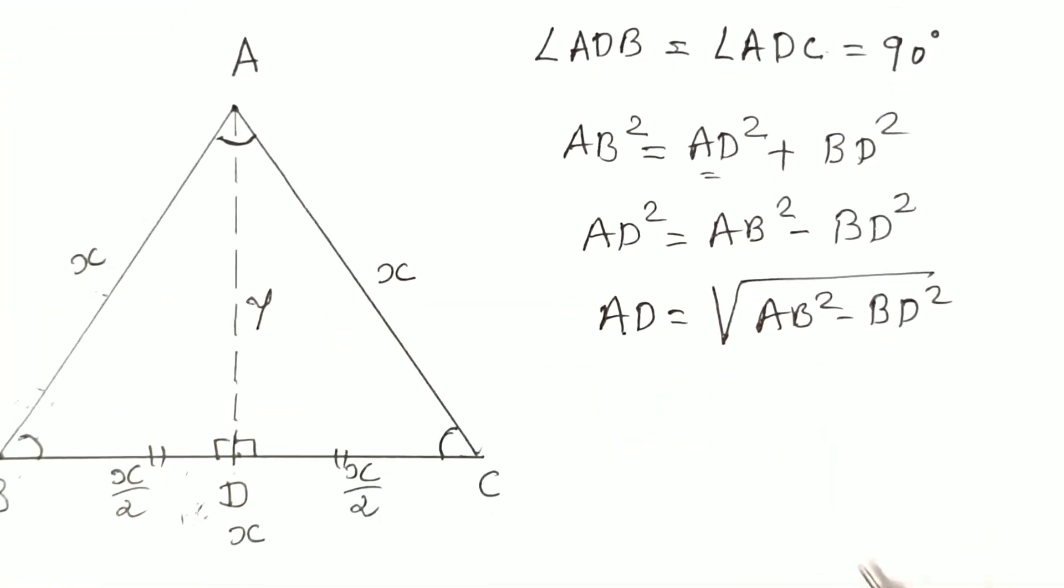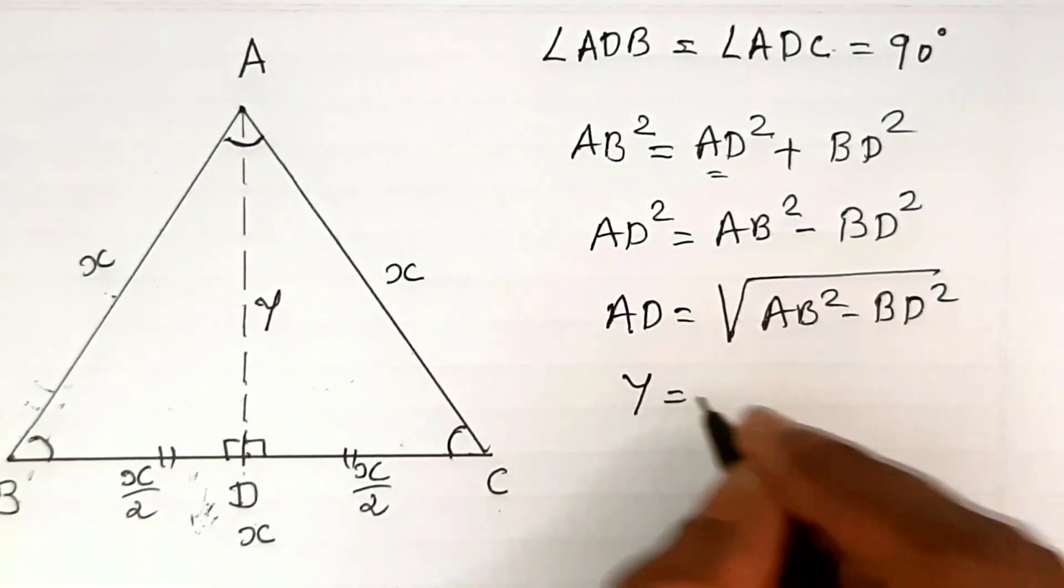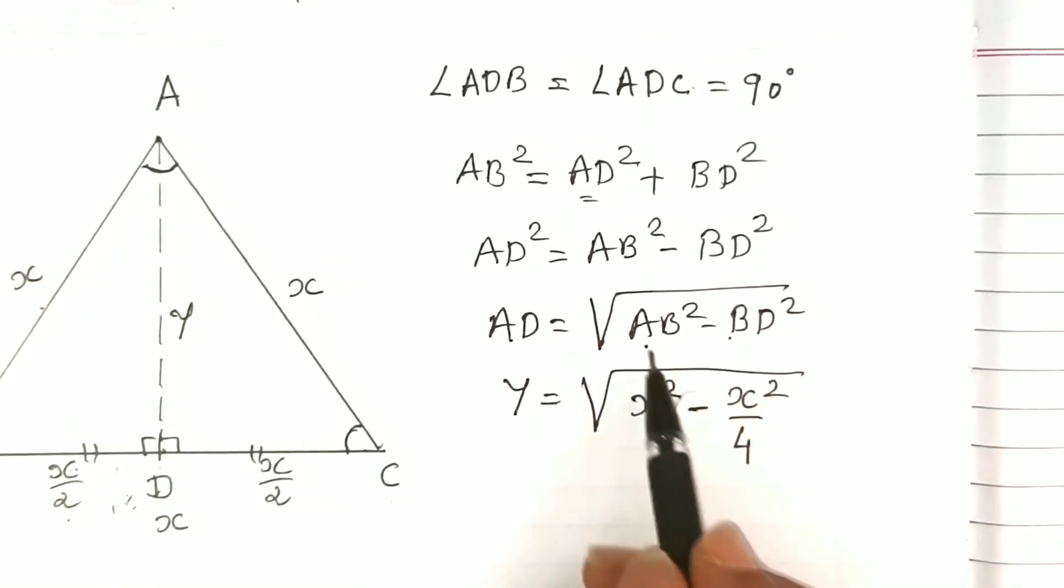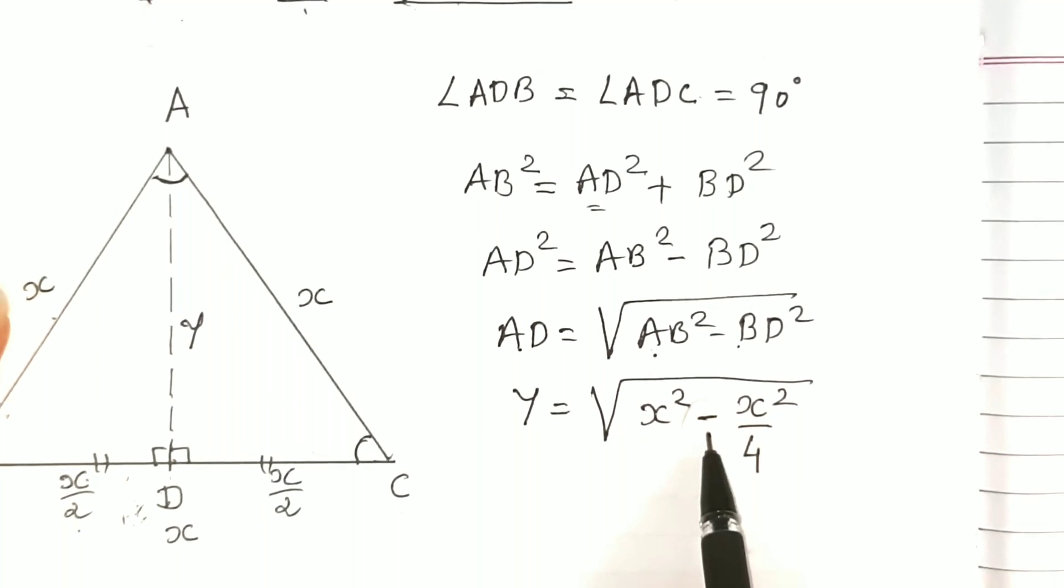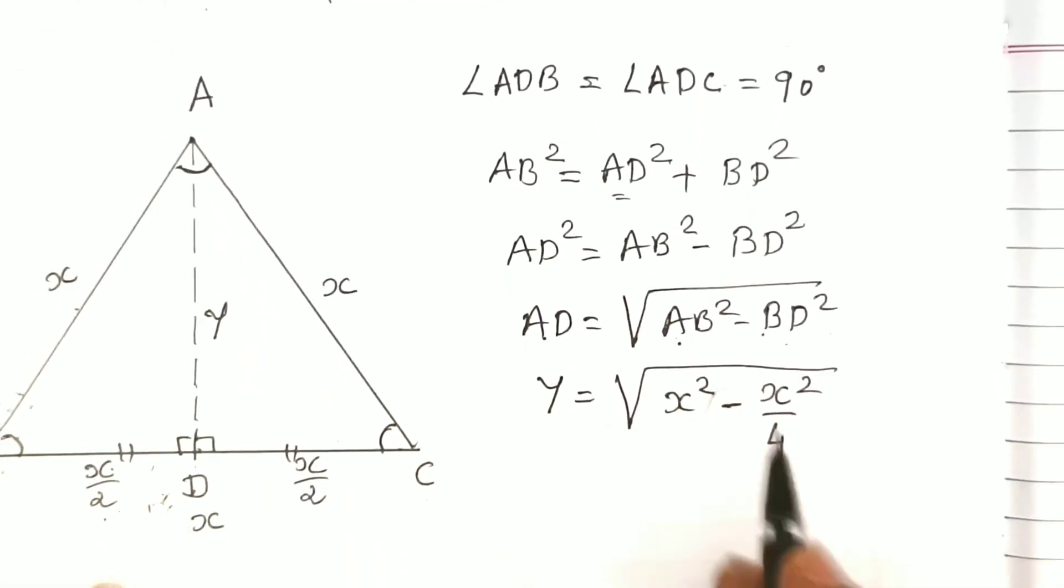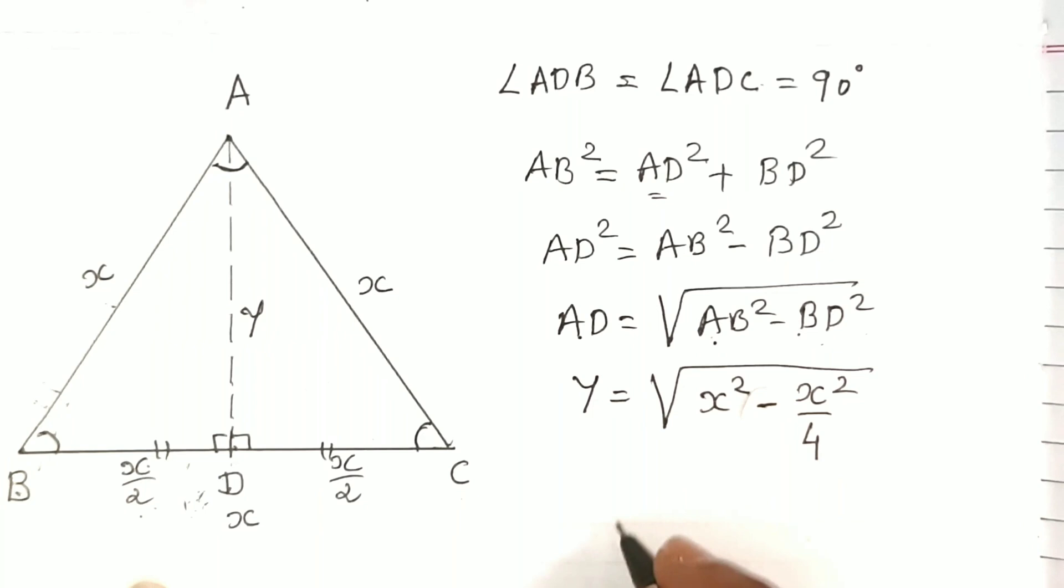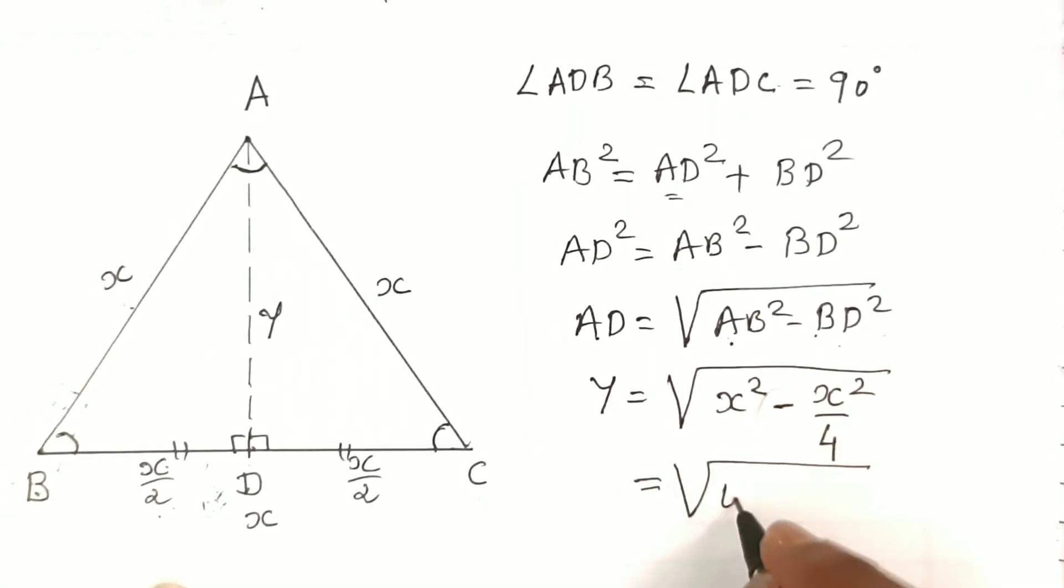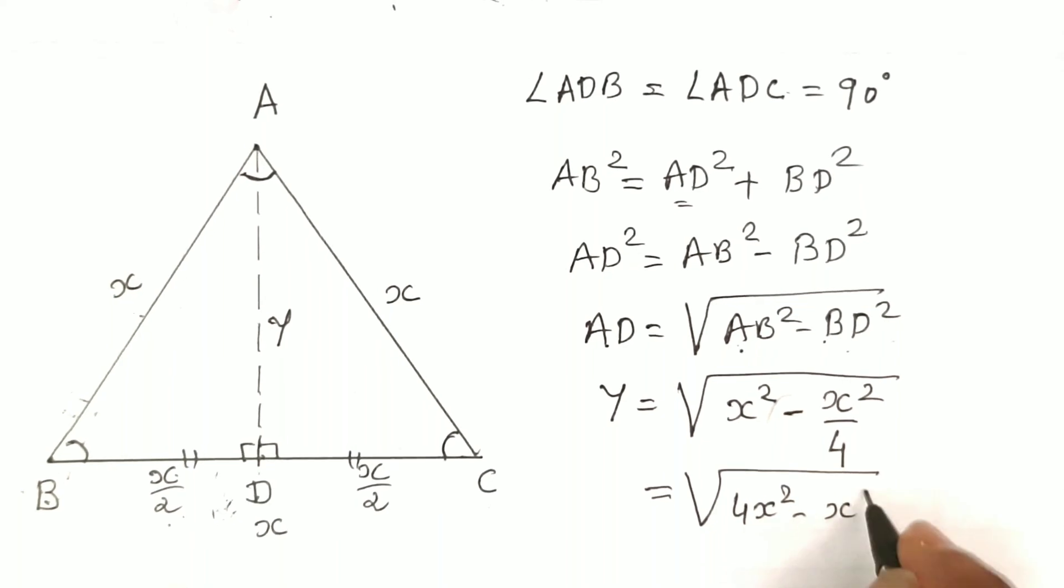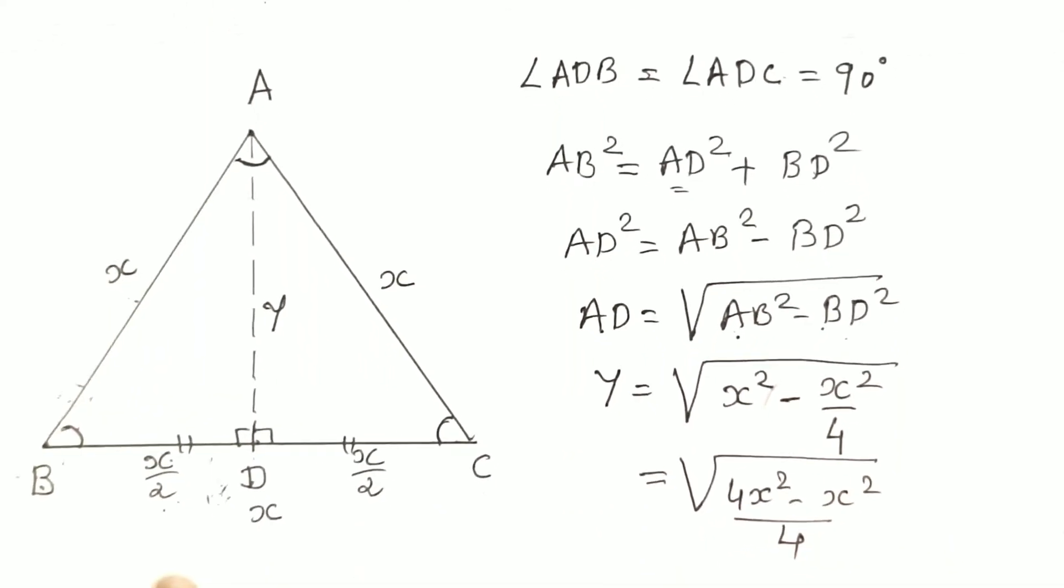We will take AD equal to y, so we have y equals the square root of AB squared, that is x squared, minus BD squared, which is x squared upon 4, which equals the square root of 4x squared minus x squared upon 4.